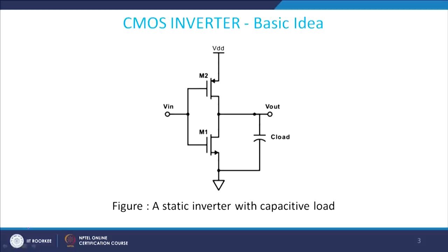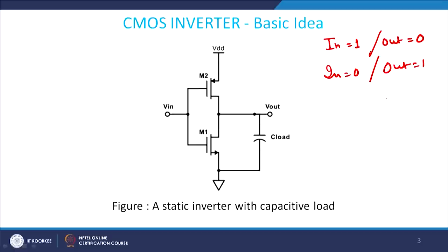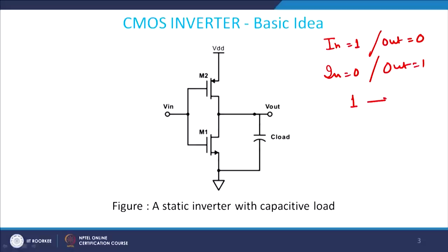An inverter means: if I give an input of 1, I get an output of 0; if I give an input of 0, I get an output of 1 — it inverts the signal. When we say 1, it corresponds to VDD, which is the applied voltage; and 0 corresponds to ground (VGND), which is 0 volts.